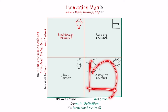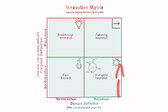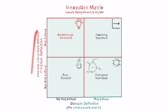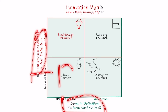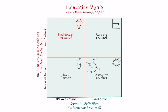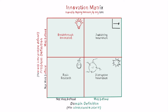Disruptive innovation usually comes from the bottom and then takes wider and wider shares of a market. So we come up with four types of innovation based on whether the problem or domain is defined: basic research, done primarily in academia or labs; sustaining innovation, done by mature companies that keep growing their core products gradually rather than exponentially.